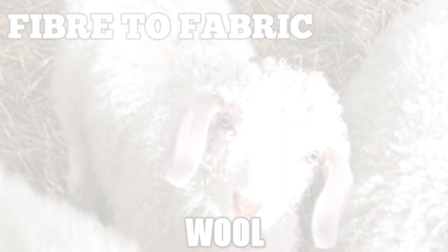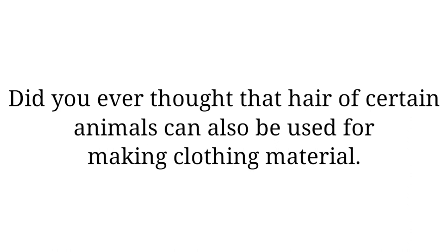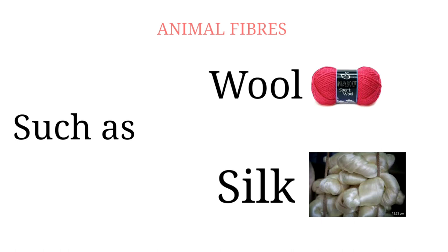Here we are going to cover the first topic of this chapter, which is animal fiber — wool and silk. Do you know that there are some types of animals that we can use as clothing materials? Wool and silk are obtained from animals, which is why these are called animal fibers or fiber from animals.